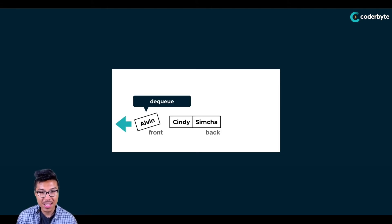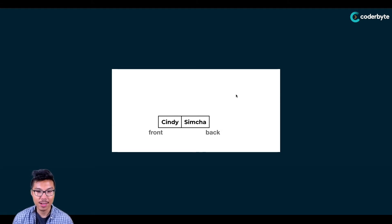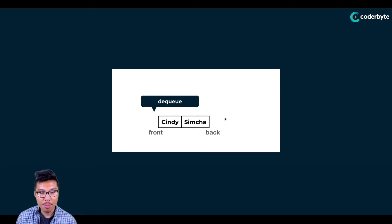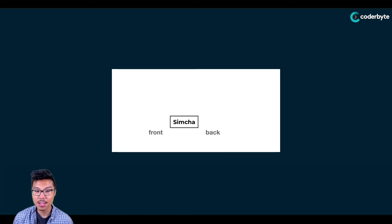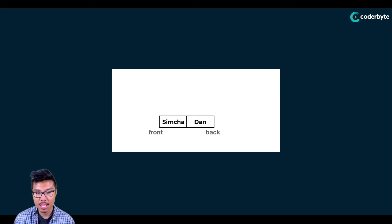Let's say I want to remove one — I want to dequeue an item. When you dequeue, you can't choose any item to remove; you must always remove the front element. So Alvin should be removed, which means Cindy is now at the front and Simha is at the back. I can do another dequeue operation, which means Cindy leaves and I just have Simha in my queue. From there, I can continue enqueuing items following the same pattern.